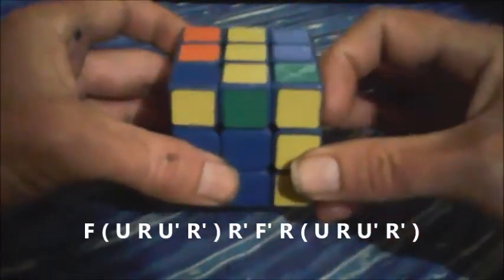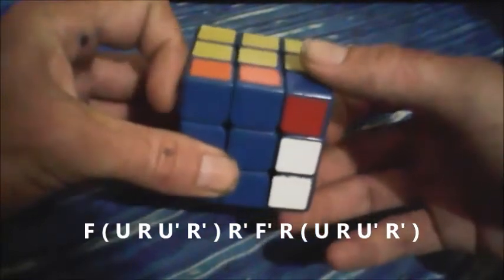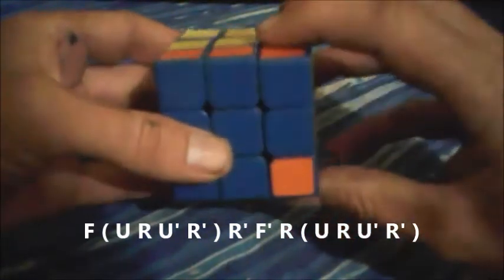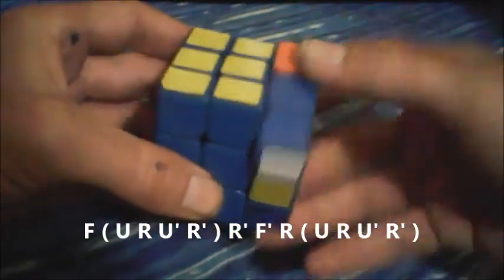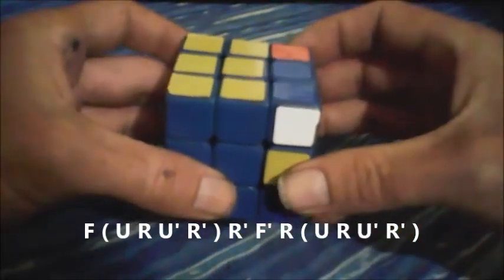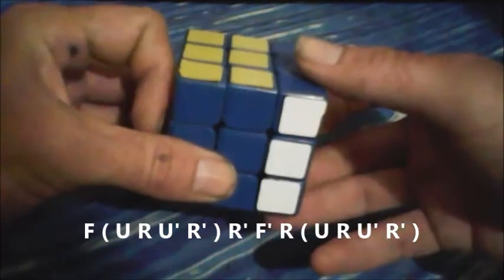So we go front, front, U, R, U prime, R prime, and then R prime, F prime, R, then U, R, U prime, R prime.